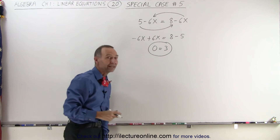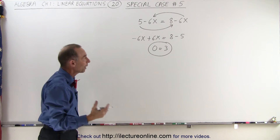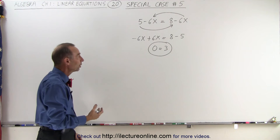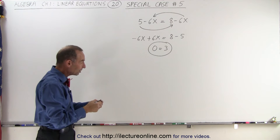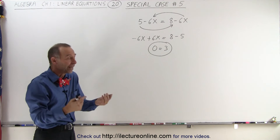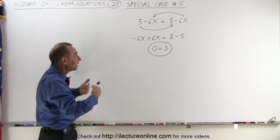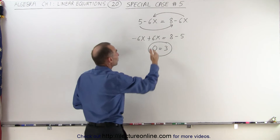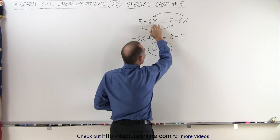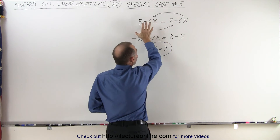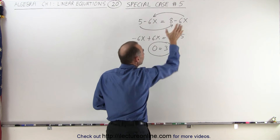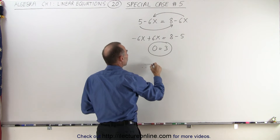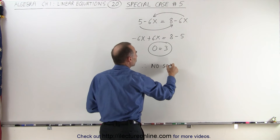Here we end up with something that is not correct. 0 doesn't equal 3, which means it doesn't matter what value we plug in for x — we can never find the right solution. There is no value we can plug in for x on both sides of the equation to make the left side equal to the right side. Therefore, we conclude there is no solution.